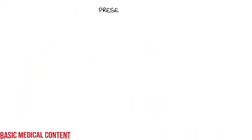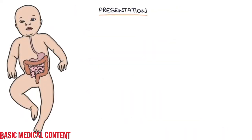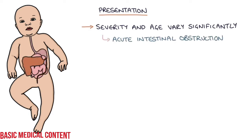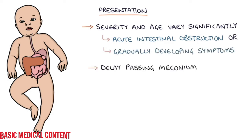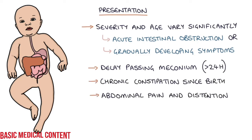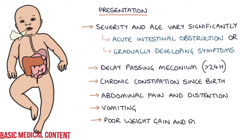The severity of presentation and the age at diagnosis varies significantly depending on the individual and the extent of the bowel affected. It can present with acute intestinal obstruction shortly after birth, or more gradually developing symptoms including a delay in passing meconium of more than 24 hours, chronic constipation since birth, abdominal pain and distension, vomiting, and poor weight gain and failure to thrive.